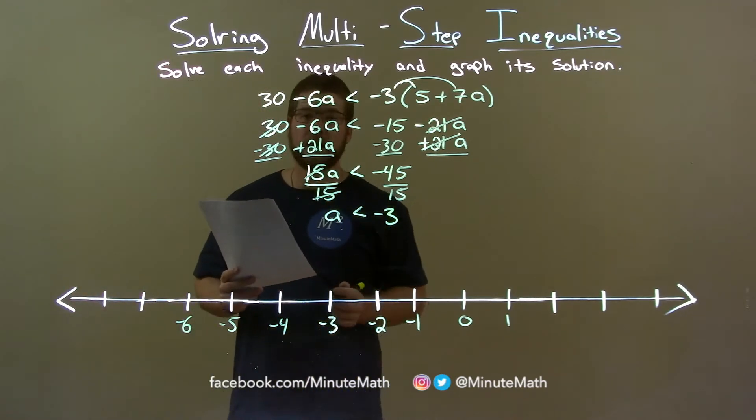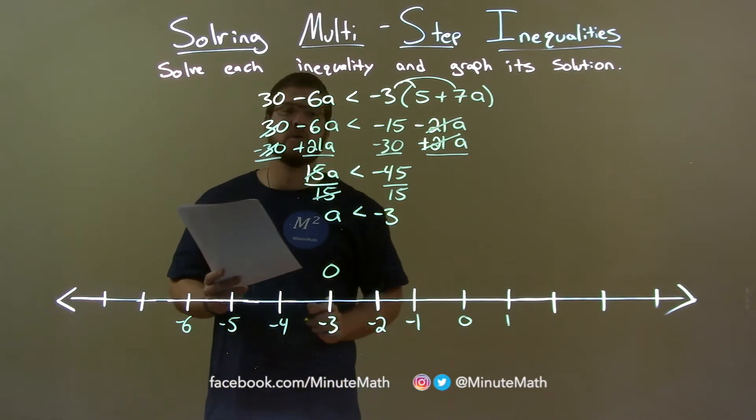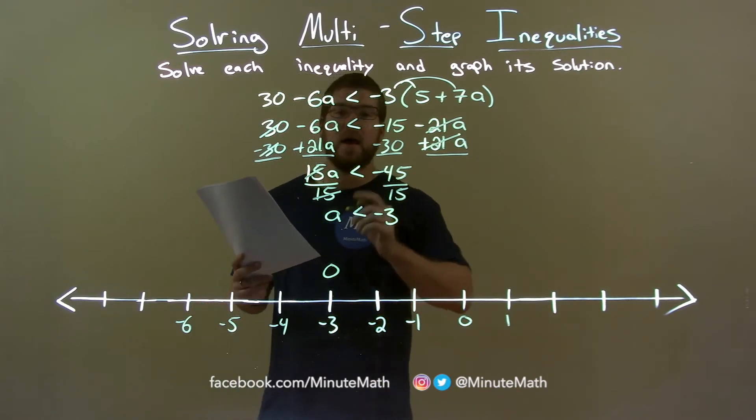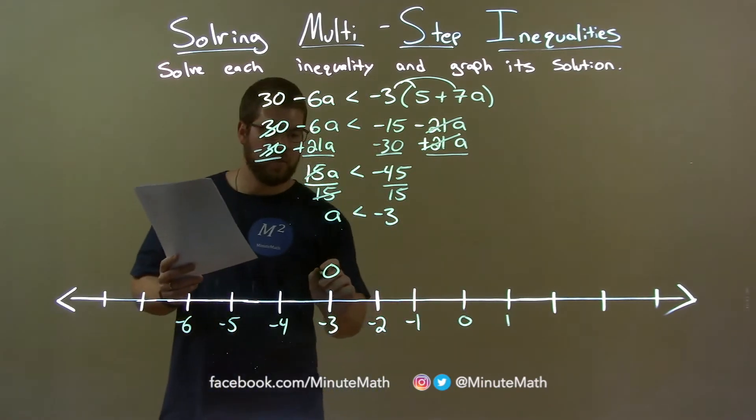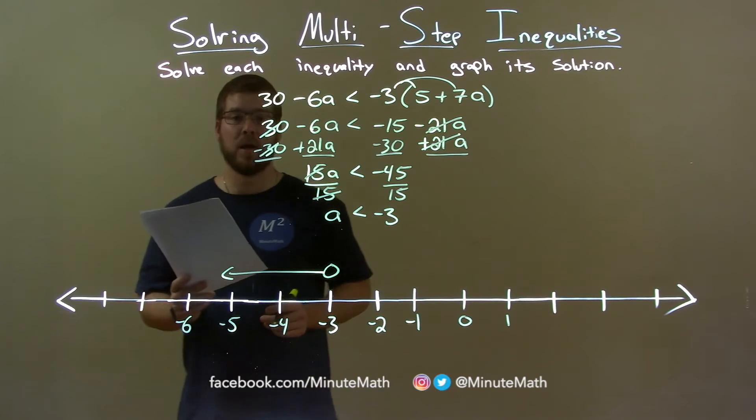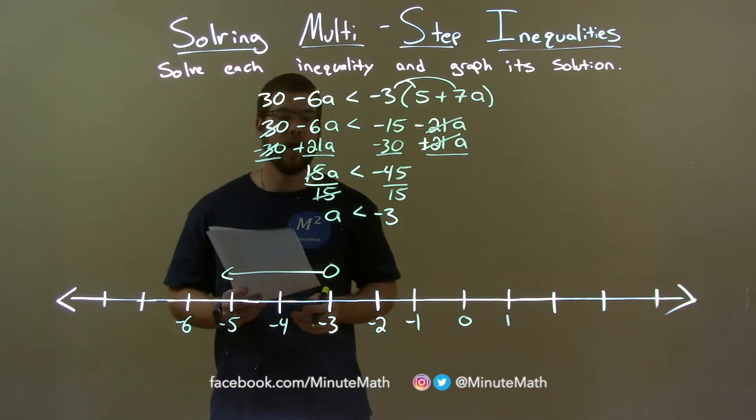A is not equal to negative 3, so that's an open circle there at negative 3. A is less than negative 3, so we put the arrow to the left, and there we have it. Our graph matches our final answer. A is less than negative 3.